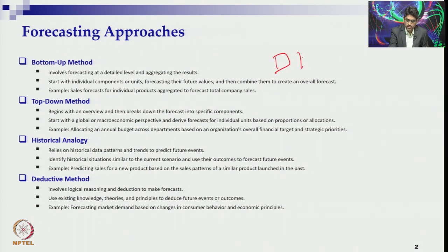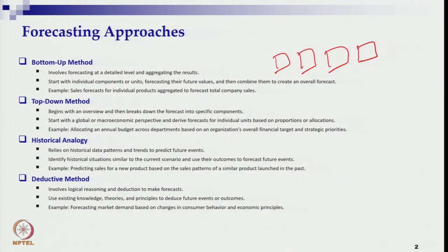From the bottom level, different units and divisions — demographic managers — estimate demand, sales, and whatever prediction is required. They aggregate all those estimates and pass them to top management.